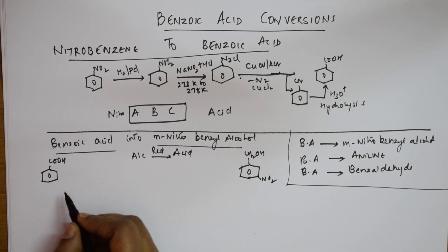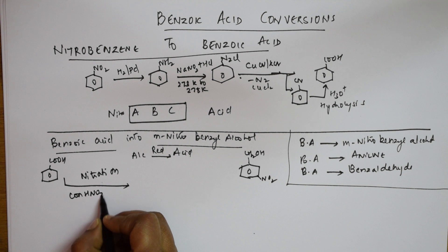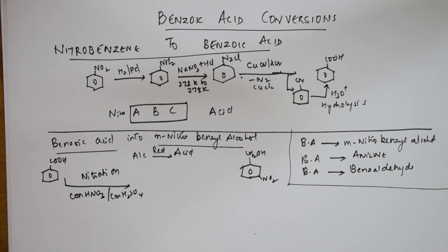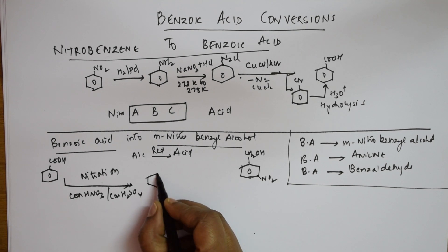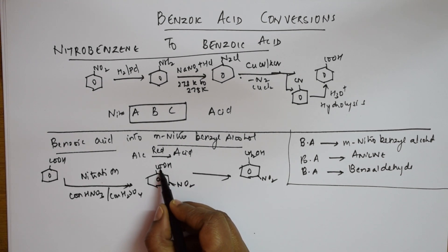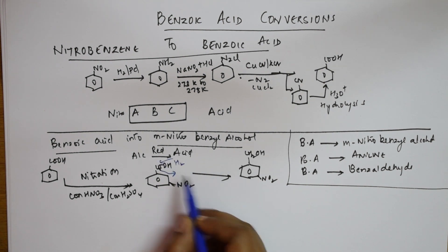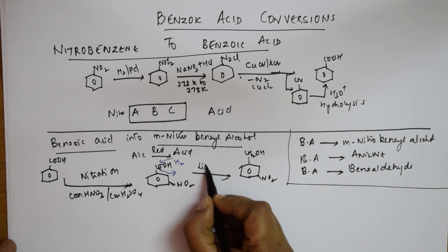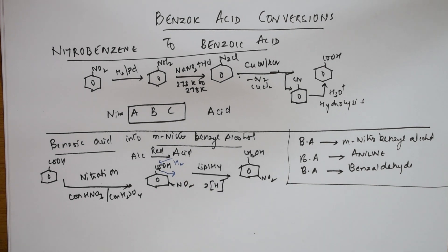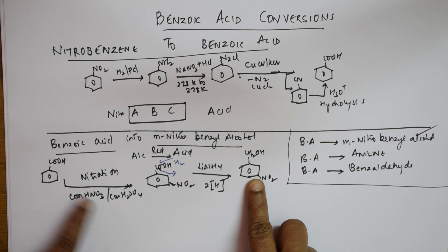What else should I add? A nitro group. I can do nitration using a nitrating mixture — concentrated HNO3 and concentrated H2SO4. Since COOH is a meta-directing group, the maximum product has nitro at the meta position, giving metanitrobenzoic acid. Then to remove oxygen and add hydrogen, I use lithium aluminum hydride as the reducing agent — two hydrogens are added, giving metanitrobenzyl alcohol. The first conversion is complete.